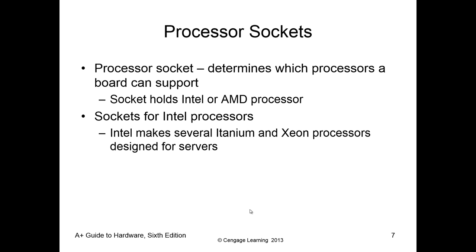Next are processor sockets — this is where we install our processor. Sockets typically hold either an AMD or Intel-based processor. Keep in mind these are umbrella companies; there are several brands under each. Intel's major manufacturing capacity includes processors, and there are many different types of Intel-based processors, so you have to be specific when choosing.